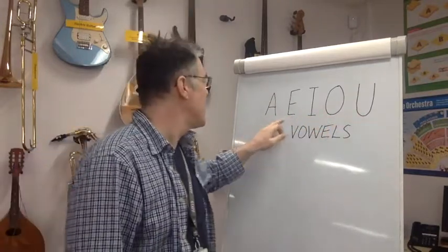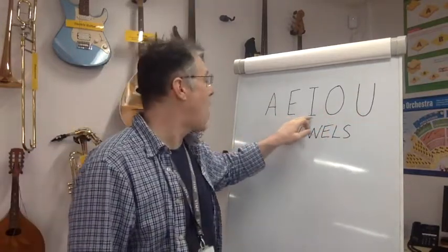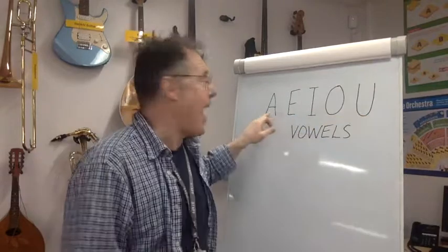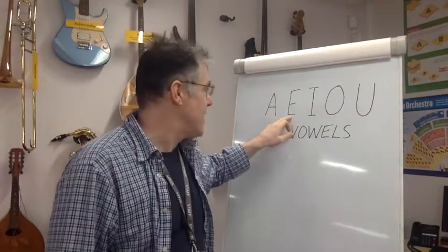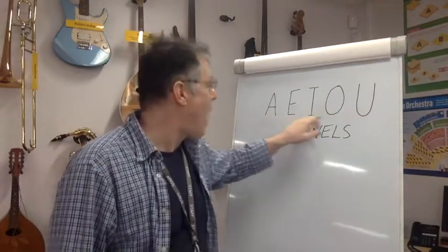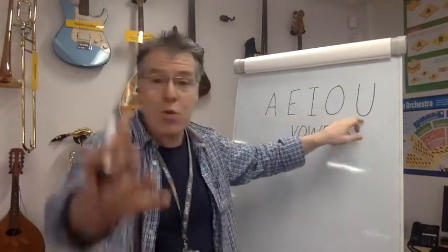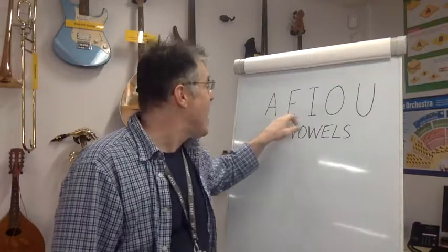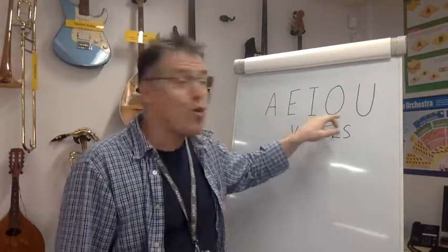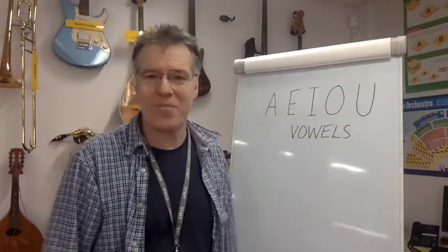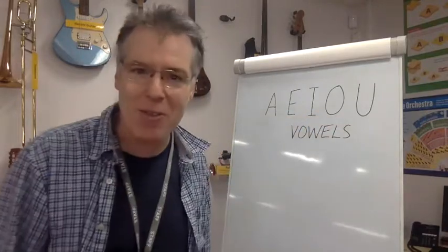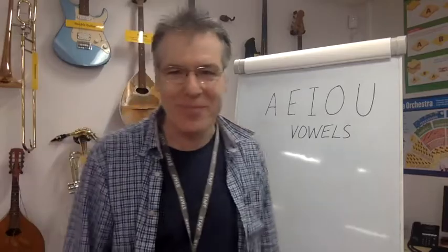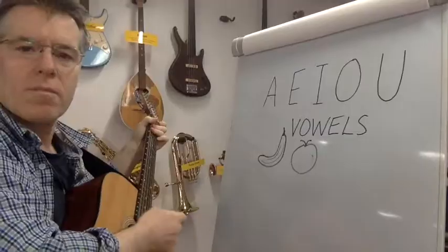Say it: A, E, I, O, U. A, E, I, O, U. A, E, I, O, U — the vowels of the alphabet. Brilliant. Now let's do the song.